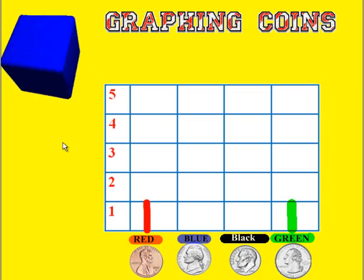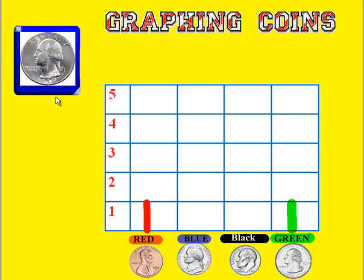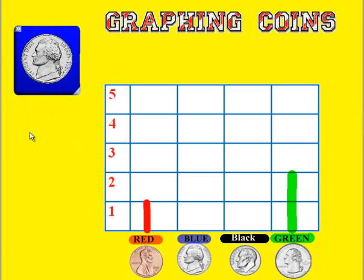Let's click on that cube — we come up with another quarter. So that means we have how many quarters? Two. Draw another green line. Do that now, so you have two quarters. Let's click on the cube again and we come up with a nickel. What color is the nickel? Blue. Pick up a blue pen and draw a line now, then place it back in the tray. Your screen should have one red for penny, one blue for nickel, no dimes yet, and two green.